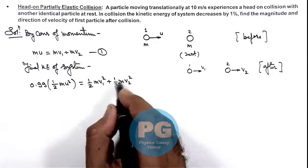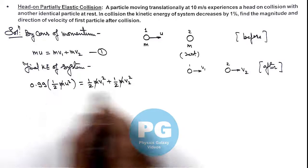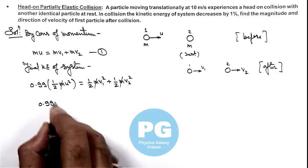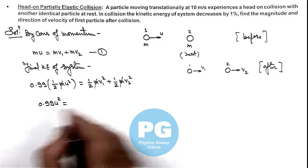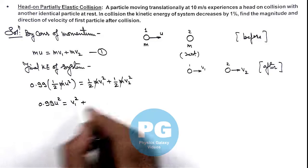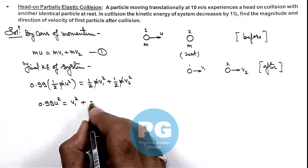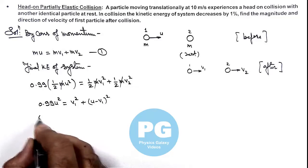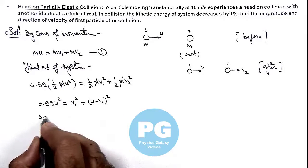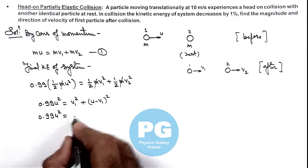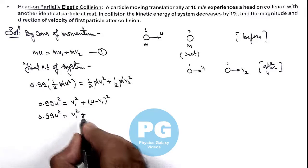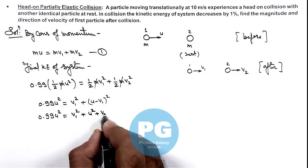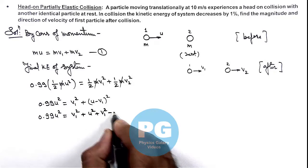Rearranging these terms: m gets cancelled out and the factor of ½ can also be cancelled. This gives 0.99·u² = v1² + v2². From the momentum equation, v2 = u − v1, so we substitute v2 as (u − v1)². Expanding this square term: 0.99·u² = v1² + u² + v1² − 2·u·v1.